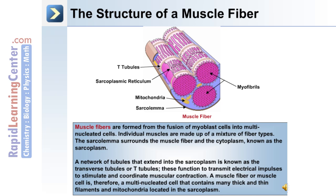This image depicts the structure of a muscle fiber. Surrounding the muscle fiber is the sarcolemma. Within the muscle fiber, including organelles such as mitochondria, are the myofibrils. Muscle fibers are formed from the fusion of myoblast cells into multinucleated cells; individual muscles are made up of a mixture of fiber types. The sarcolemma surrounds the muscle fiber and the cytoplasm, known as the sarcoplasm. A network of tubules that extend into the sarcoplasm is known as the transverse tubules or T-tubules, which function to transmit incoming electrical impulses to stimulate and coordinate muscular contraction. A muscle fiber is therefore a multinucleated cell that contains many thick and thin filaments and mitochondria located in the sarcoplasm.